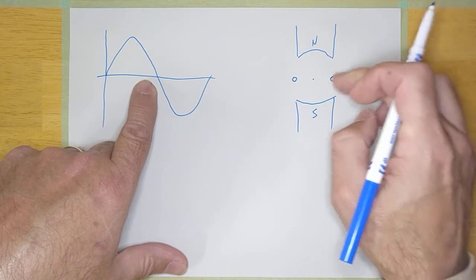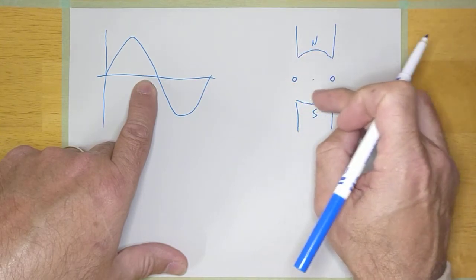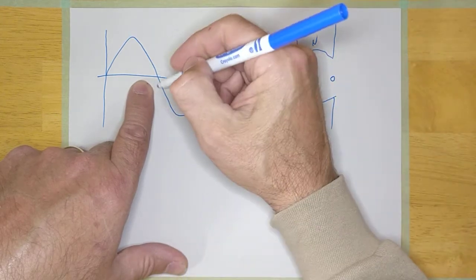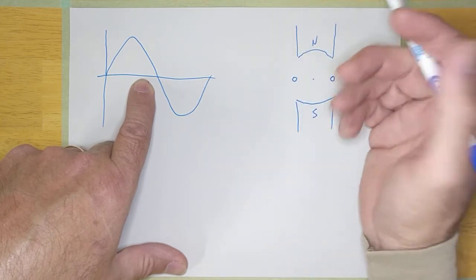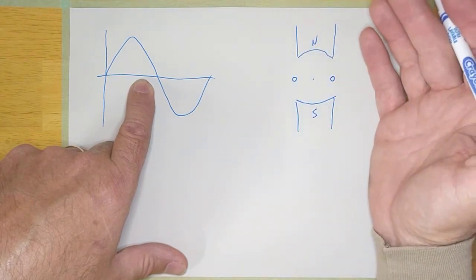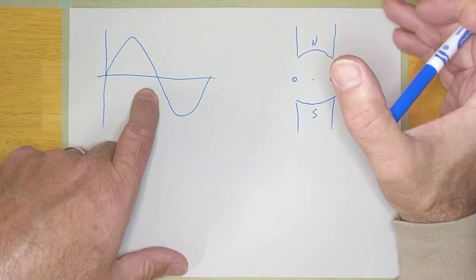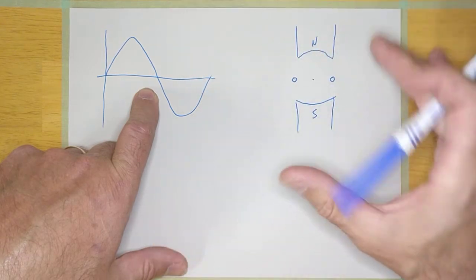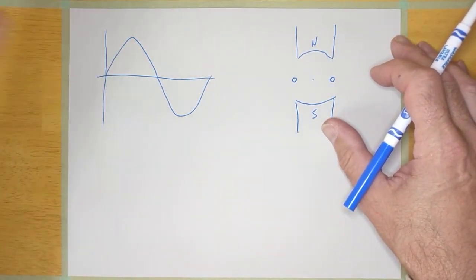But then as it comes around to the 180 degree mark, it does the exact same thing but in the opposite direction through the flux. And so the second part of the waveform here looks exactly the same but it's negative. And so the reason AC exists is because we rotate conductors through magnetic fields. And so it's just an artifact of that.